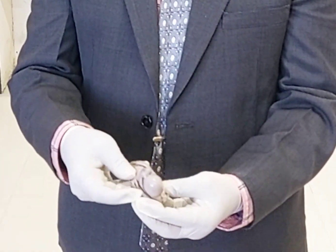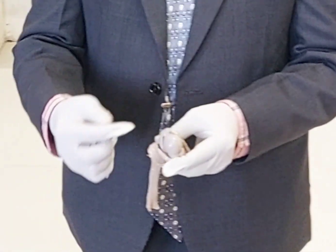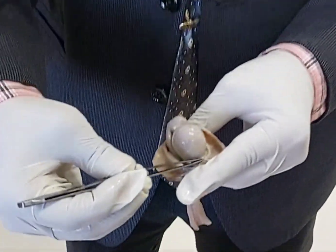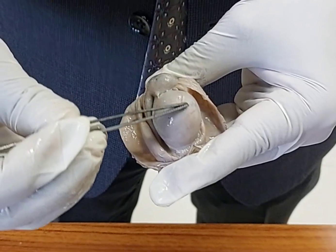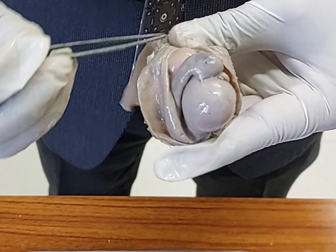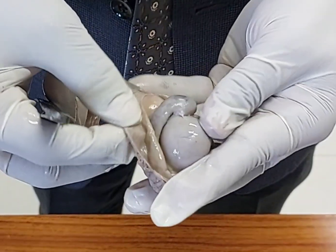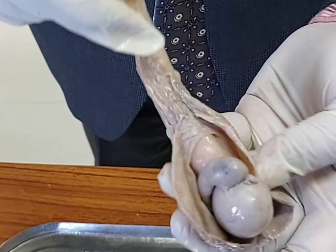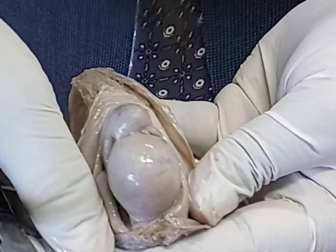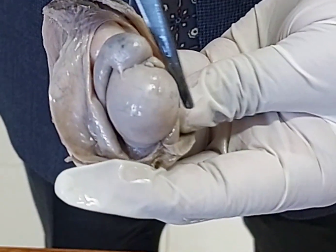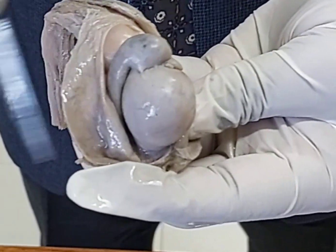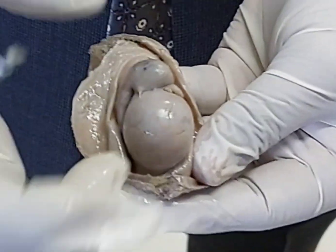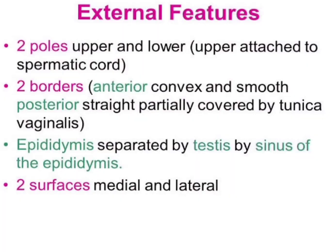What are the parts of the testis? It has two poles — one upper pole, one lower pole — and two borders: this is the anterior border, which is convex, and one posterior border. We cannot see the posterior border properly because of the attachment of the spermatic cord. And two surfaces: one medial surface, one lateral surface. So, two poles, two borders, and two surfaces.